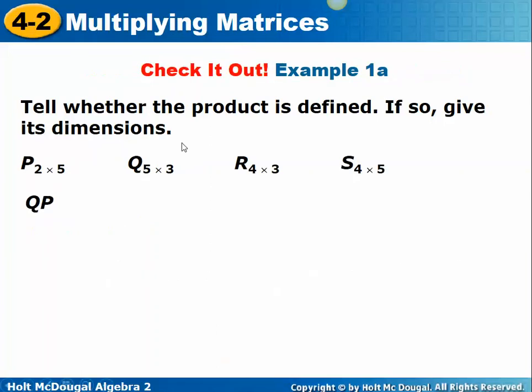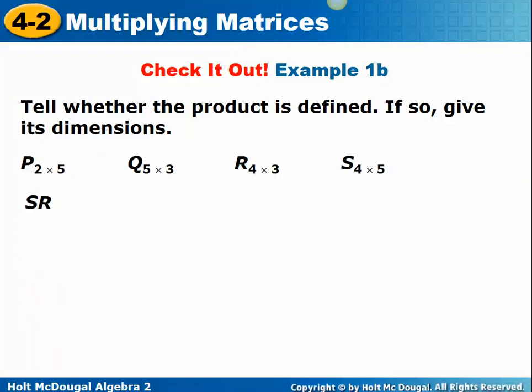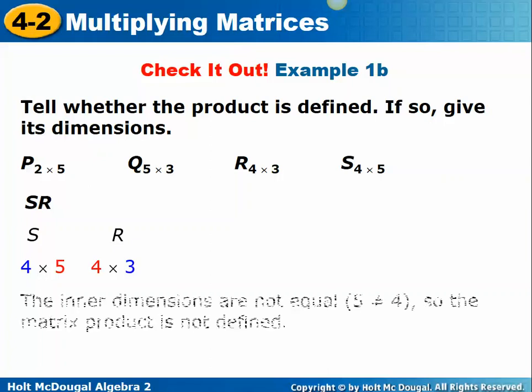How about Q times P? Q is a 5 by 3 and P is a 2 by 5. The 3 and the 2 are not the same, so this is not defined — you could not multiply those together. Now look at S times R: S is a 4 by 5 and R is a 4 by 3. The columns of the first, 5, is not equal to the rows of the second, 4, so it's not defined.